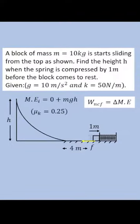Final mechanical energy is equal to final kinetic energy plus final potential energy. Final kinetic energy is 0 and final potential energy is half kx squared due to the spring.